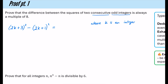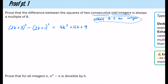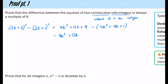Let's do the expansion of the first bracket. 2k plus 3 squared gives 4k squared plus 12k plus 9. Now I'm subtracting — definitely put big brackets around this — we get 4k squared plus 4k plus 1. The 4k squared terms cancel. I'm just left with 12k minus 4k, which is 8k, and 9 minus 1, which is plus 8. To show something is a multiple of 8, take out the factor of 8, and we get 8(k plus 1).